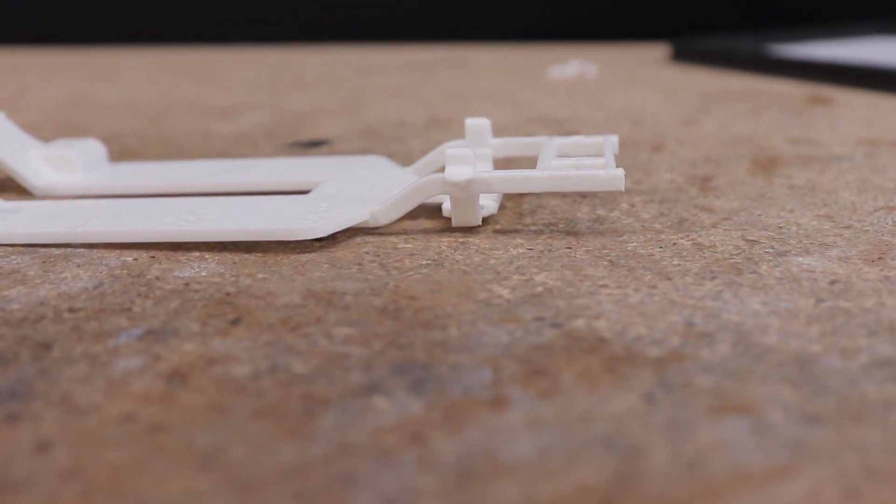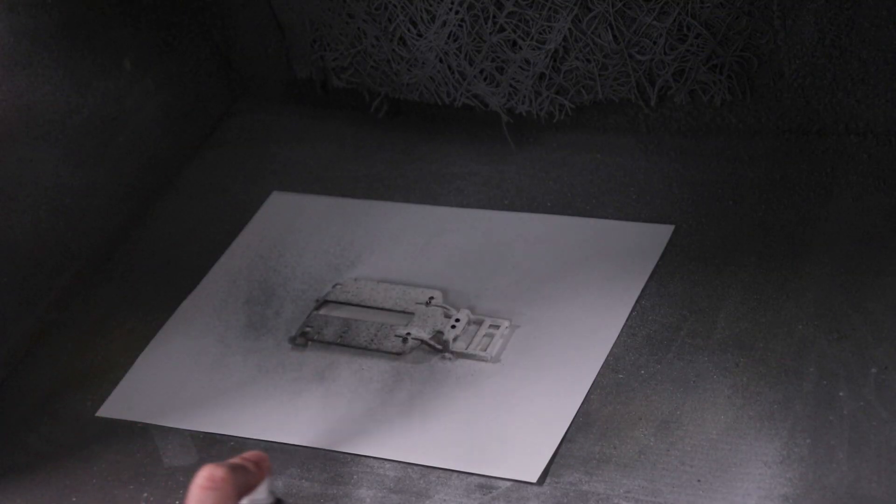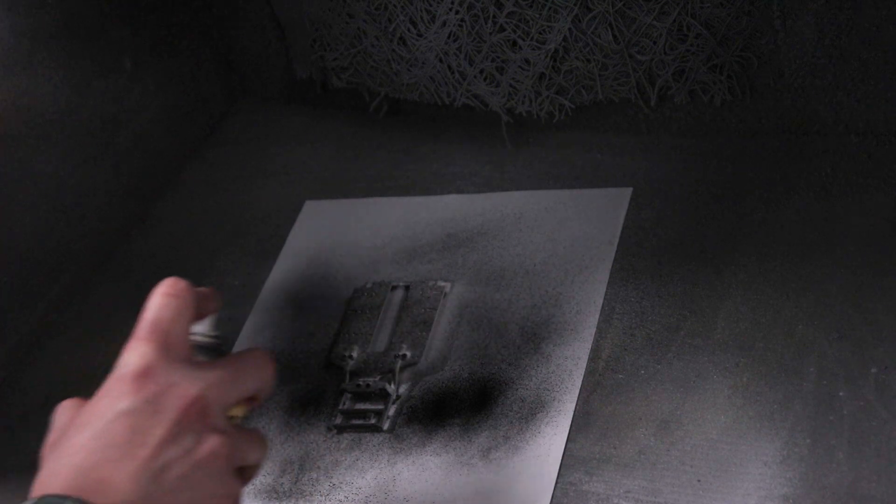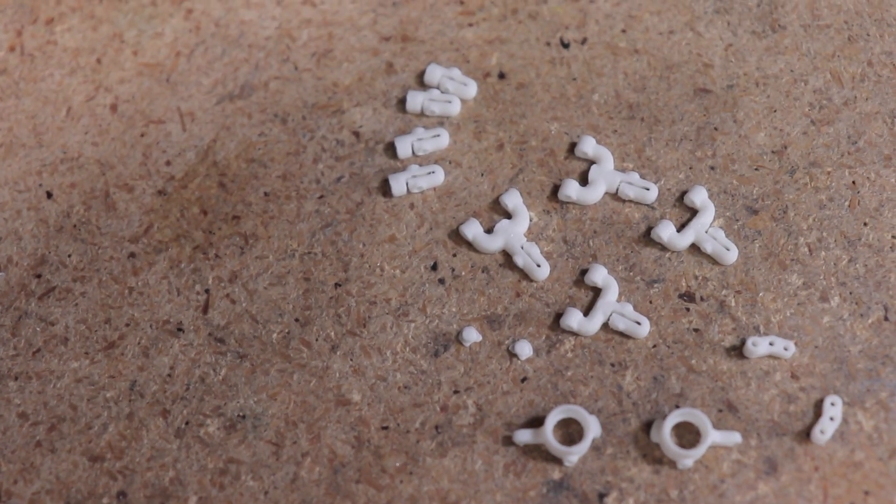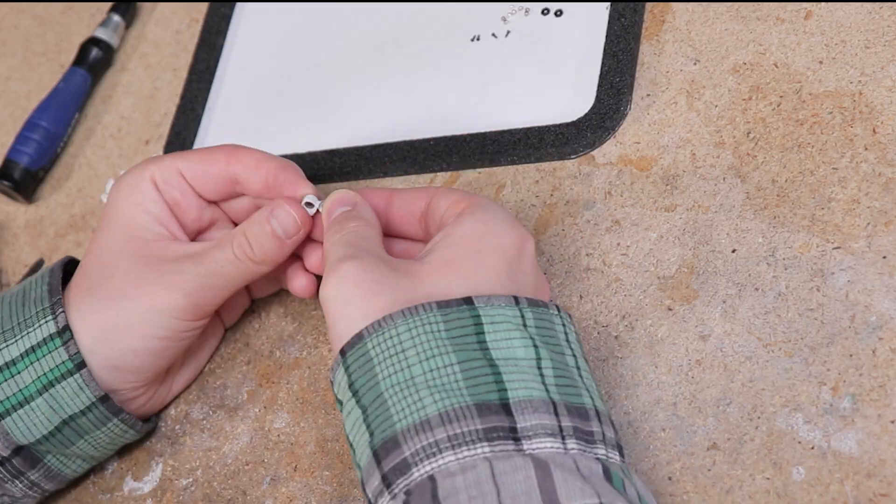The main chassis piece looked good but I wanted to spray it with some matte black paint. While waiting for that to dry I assembled the steering arms and knuckles.